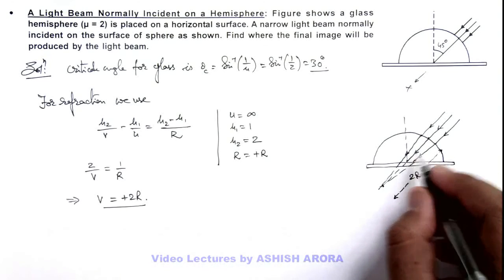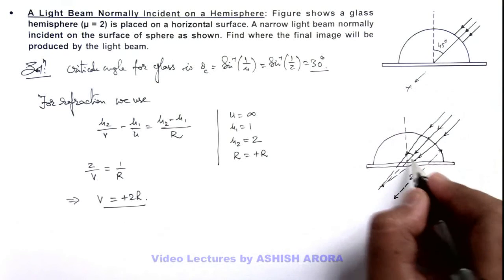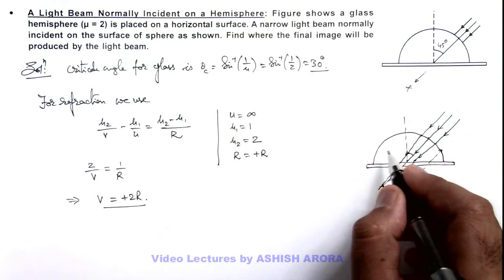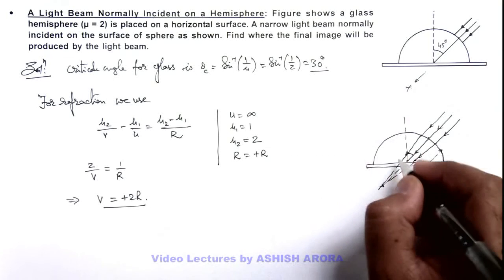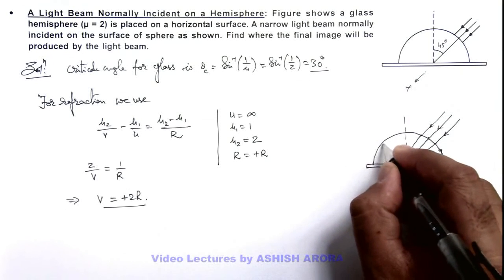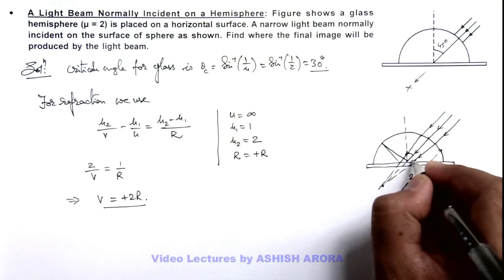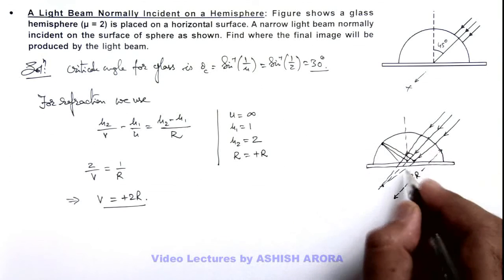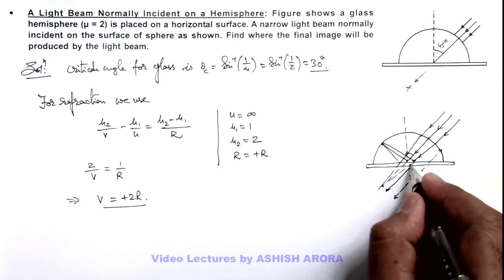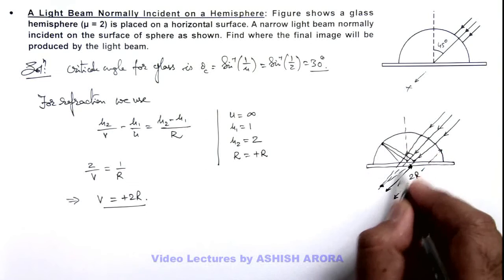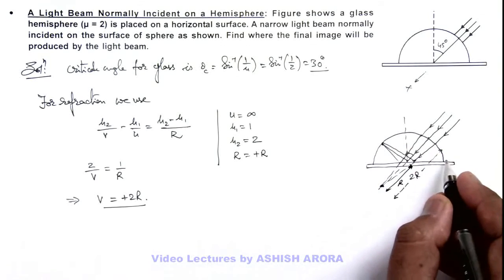As this is incident at an angle 45 degrees, the light rays will be reflected, and the base will behave like a mirror. For this initial image, the final image is produced exactly opposite.